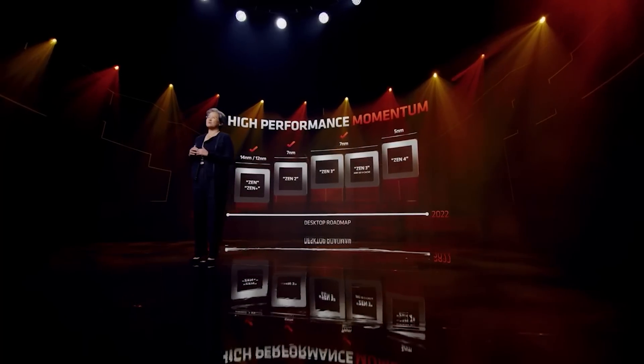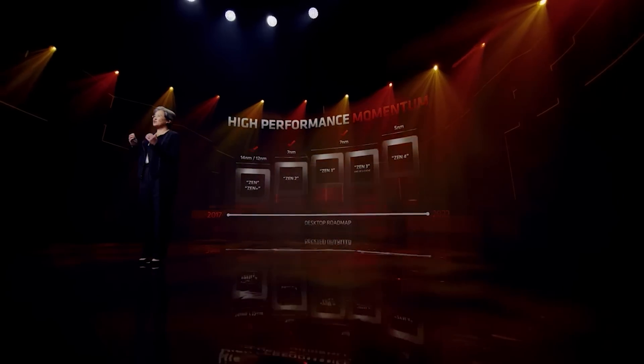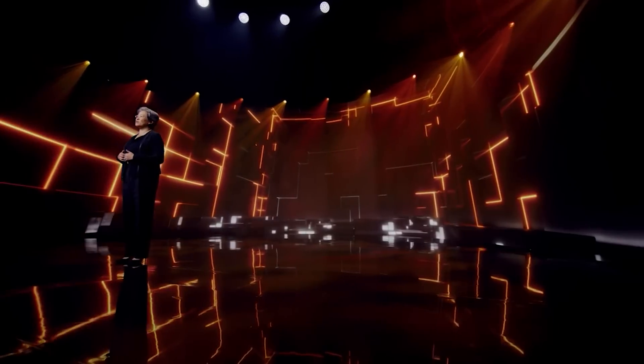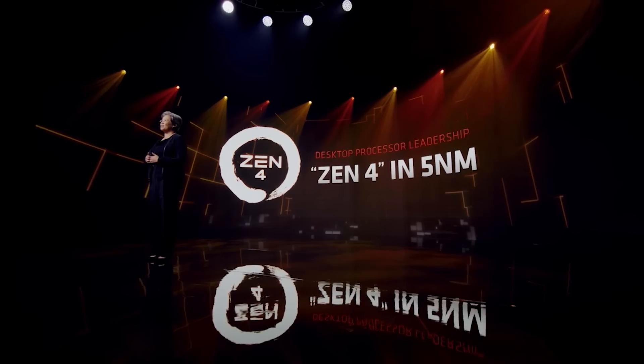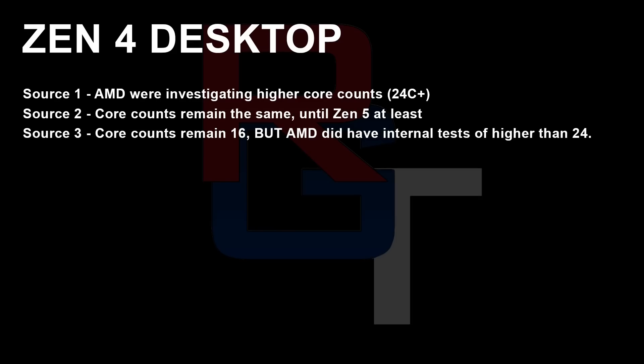So will we see an increase in core count? For the desktop, one of my sources told me that AMD were investigating higher core counts such as 24 plus. However, a second source told me that core counts are probably going to remain the same until Zen 5 at the least. A third source told me that core counts remain at 16, but AMD did have internal silicon they've been testing with core counts of 24 cores plus — though it doesn't seem like they will release this silicon at the moment.